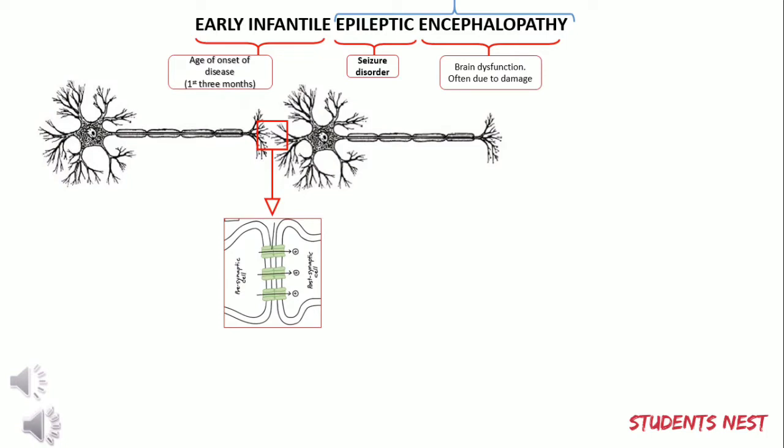An excitatory neurotransmitter like glutamate promotes the generation of an electrical signal by binding to certain receptors on the surface of the receiving neuron, which cause it to open the ion channels and relay the electrical signal. On the flip side, inhibitory neurotransmitters like GABA dampen the electrical signals by closing the ion channels after the electrical signal has been relayed.